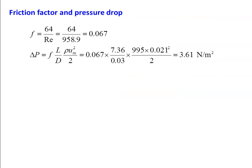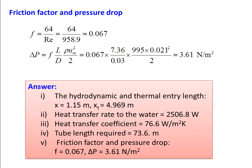Friction factor and pressure drop: F = 64/Re = 64/958.9 = 0.067 (from data book, page 124). Pressure drop: ΔP = F × (L/D) × (ρ·Um²/2) = 0.067 × (7.36/0.03) × (995 × 0.021²/2) = 3.61 N/m². Answers: hydrodynamic entry length x = 1.15 m, thermal entry length xt = 4.969 m, Q = 2506.8 W, h = 76.6 W/m²·K, L = 7.36 m, F = 0.067, ΔP = 3.61 N/m².